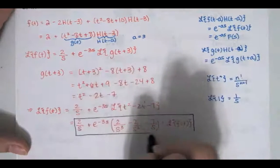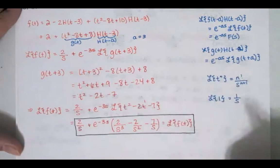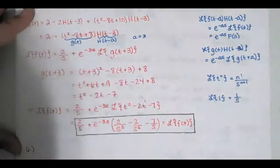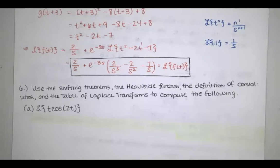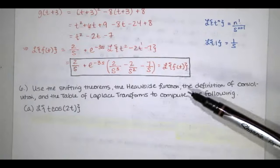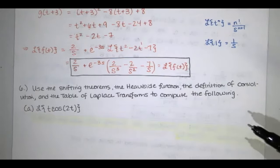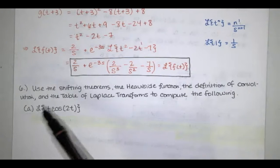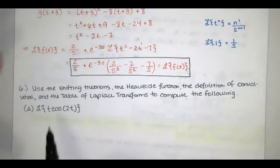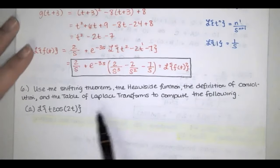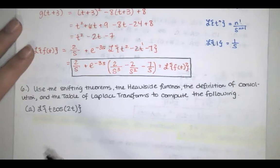That's problem five on quiz number seven. Now let's look at problem six. In part a, we're asked to use the shifting theorems, the Heaviside function, the definition of convolution, and the table of Laplace transforms. There's actually an entry in the table that looks just like this — it has t times cosine of kt. We'll use one of the shifting theorems to find this, then confirm the answer using the table.